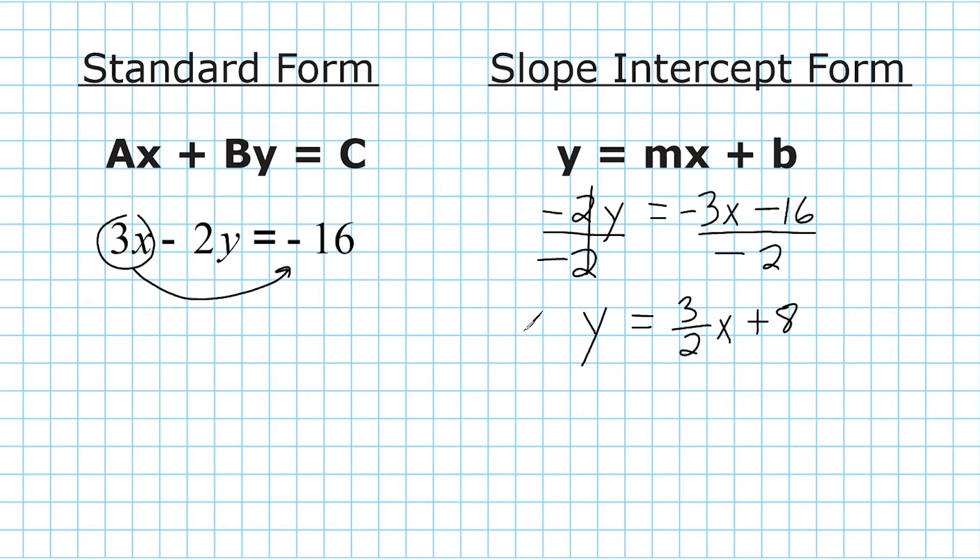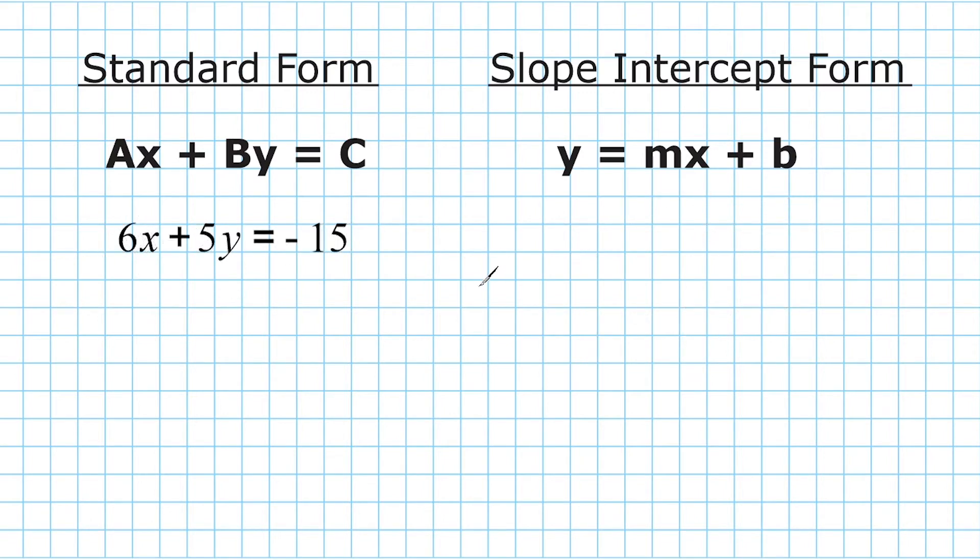Let's run through one more example just so we can get the hang of this. All right, so once again, I'm going to start with the y term, which is positive 5y. So I'm just going to write 5y is equal to, and then we take this C term, negative 15, and we're going to write it underneath the b for the slope-intercept form. So let's write negative 15 here or minus 15.